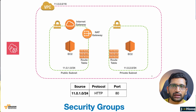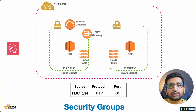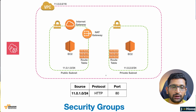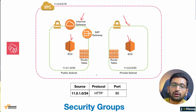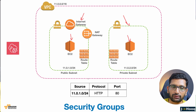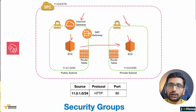The next question is: what's the difference between a firewall and a security group? The security group is responsible for validating traffic between resources within AWS. Here you can see a public subnet and a private subnet, each with an EC2 instance. If a person is trying to access from the public EC2 instance to the private EC2 instance, a security group is placed between them. The security group can exist between AWS resources.